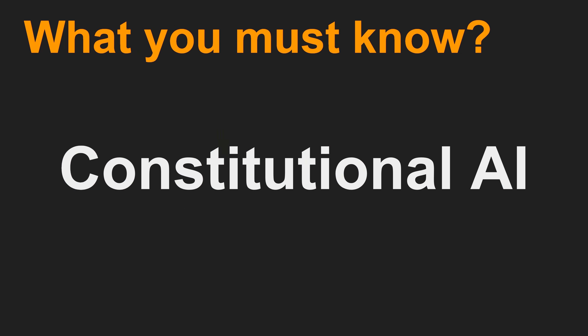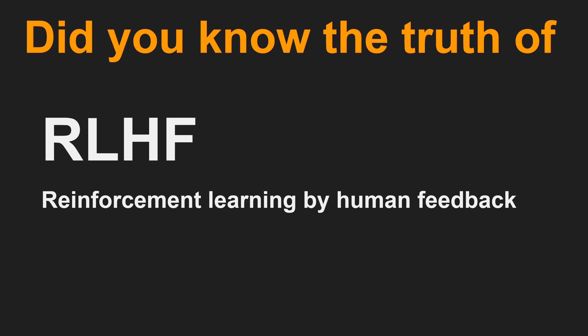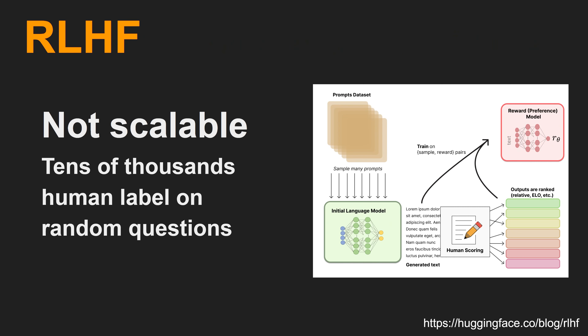The key algorithm behind this is Constitutional AI. In order to understand Constitutional AI, first we need to know the backstory of RLHF. The key concept of RLHF is: humans ask questions to AI, and humans give feedback with ranking to train a preference model which reinforces AI's responses.